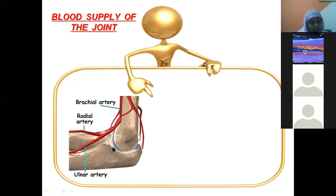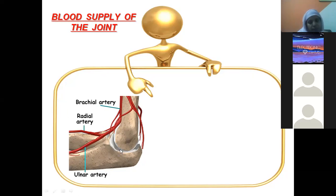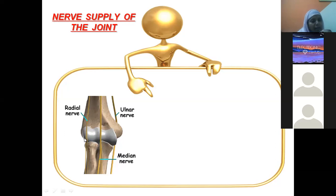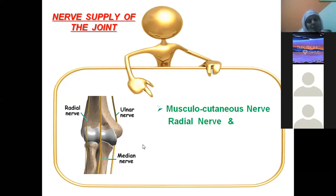The blood supply of the elbow joint comes from the anastomosis around the elbow joint — the cubital anastomosis — formed by recurrent branches of the brachial artery, radial artery, and ulnar artery. The nerve supply comes from three nerves: the ulnar nerve behind the medial epicondyle, the median nerve anteriorly, the radial nerve laterally, and the musculocutaneous nerve, which becomes cutaneous here.